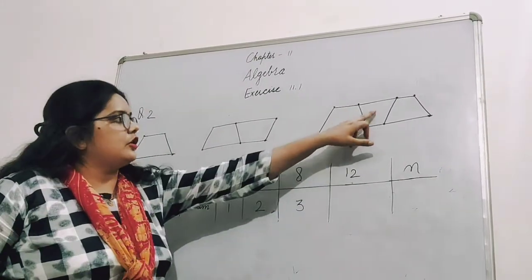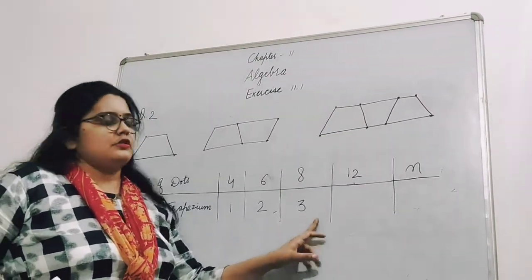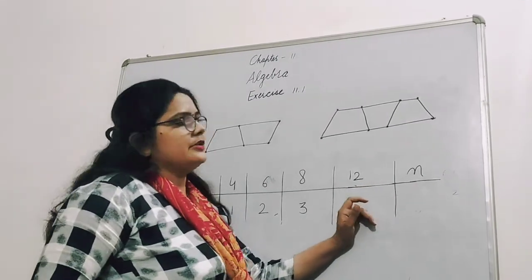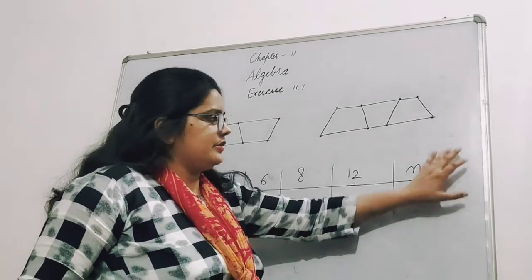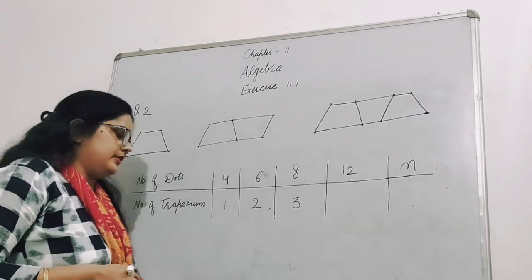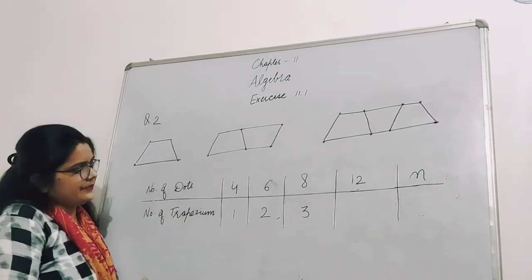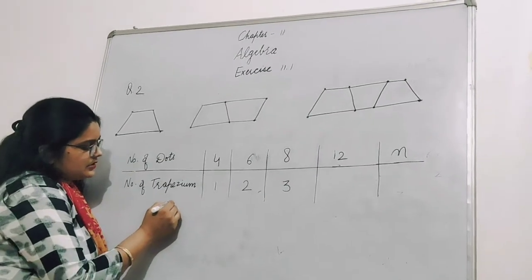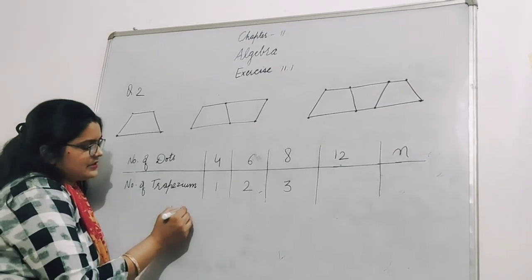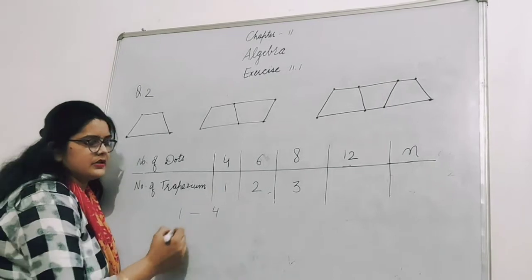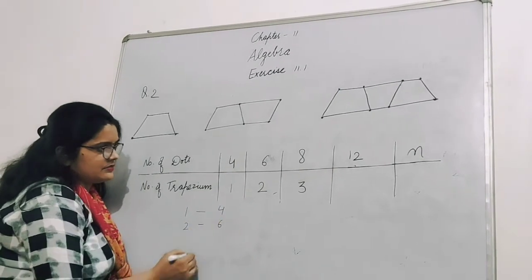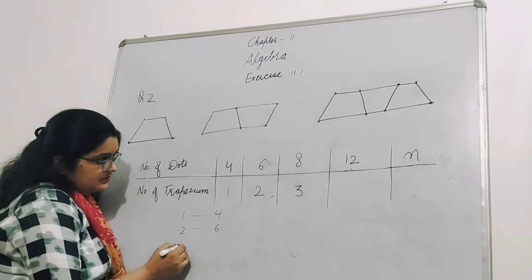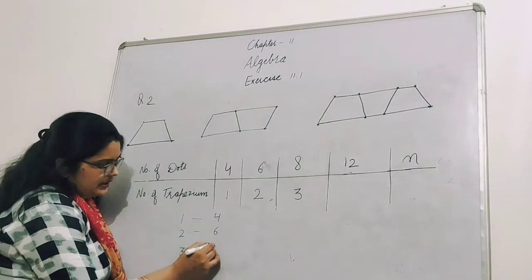Now eight dots, three trapeziums. Then I have to tell: in twelve dots, how many trapeziums will complete? Then n number of dots - how many trapeziums will form? We have to find a general term. Look here: 4 dots makes 1 trapezium, 6 dots makes 2 trapeziums, 8 dots makes 3 trapeziums.